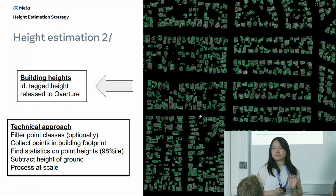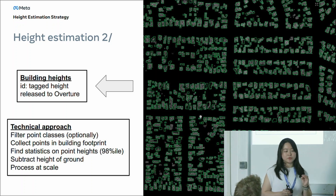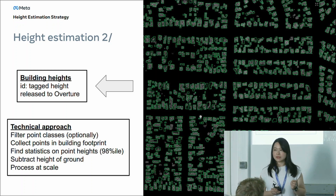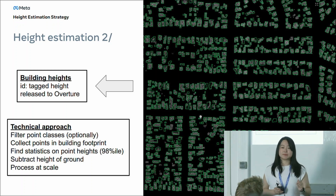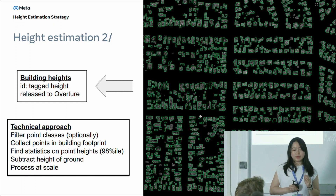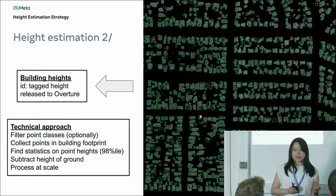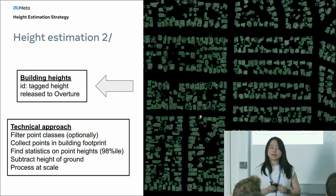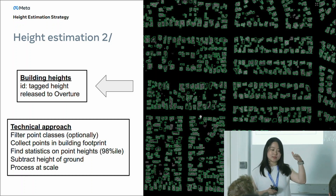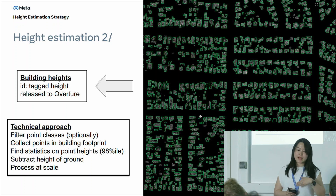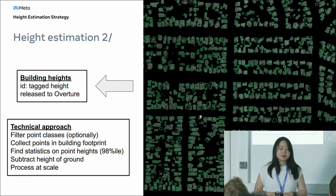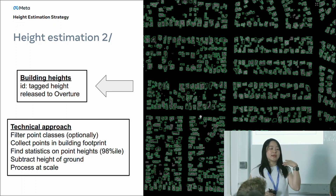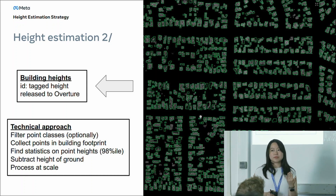Once we finish the filtering steps, we sample each building footprint, sample the height of valid LiDAR data, and take the 98th percentile. Why the 98th percentile? Because the tallest point of the building is supposed to be the maximum height, but it may not reflect the rooftop height. At the highest point, the maximum height could include a chimney, which we don't want included. Our research shows that the 98th percentile oftentimes represents the rooftop height instead of protrusions on top of the roof.